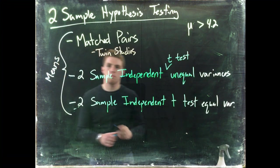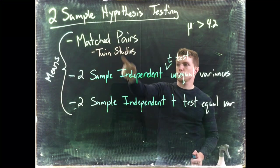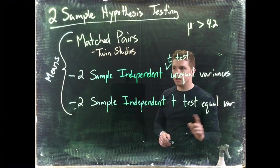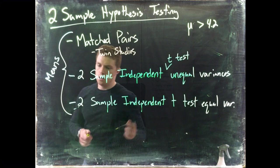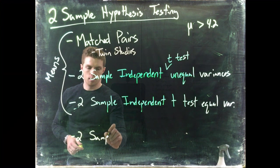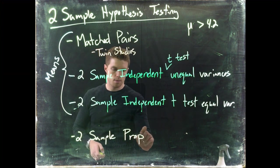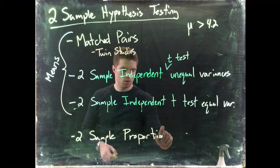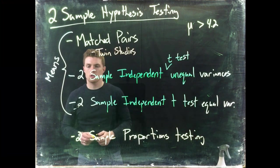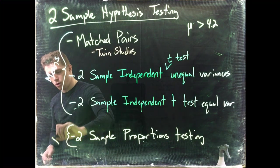We're comparing the means from two samples to one another, whether we're doing matched pairs, two-sample independent with unequal variances, or two-sample independent with equal variances. The last test is two-sample independent proportions testing, which lets us compare two proportions to one another and deals with categorical variables.